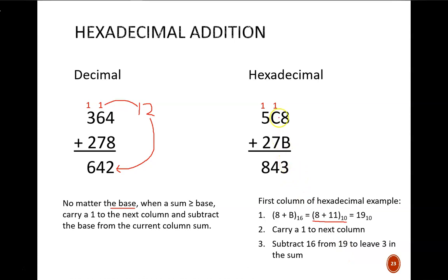The next column reads in decimal as 1 plus 12 plus 7. This gives 20. 20 equals 16 plus 4. So ultimately I write 4 as the sum and a carry of 16. The last column is simply 1 plus 5 plus 2 equals 8. No carries necessary.